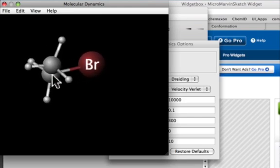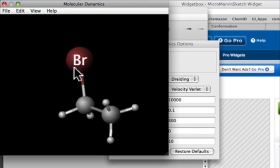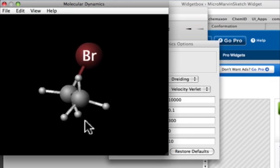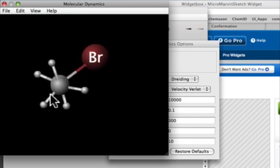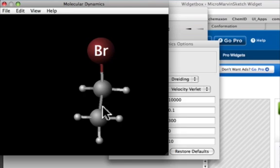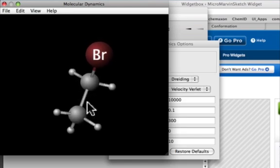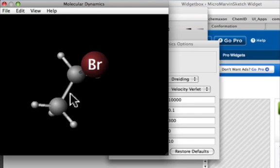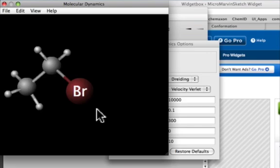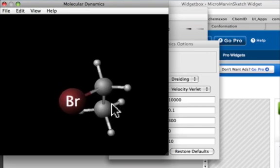You can see it vibrating back and forth in an oscillatory sense. If we were to look at this for a much longer period of time, we would occasionally see a complete rotation around that carbon-carbon single bond. But on this short 1 picosecond timeframe, we don't allow enough time to see a full rotation about that bond.